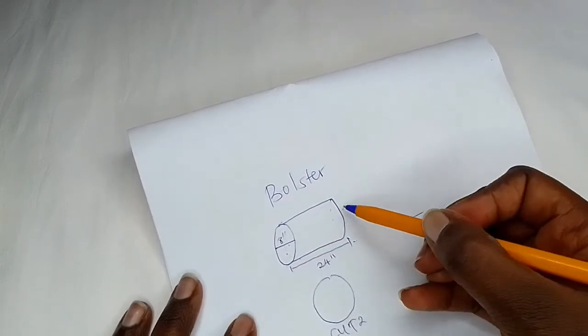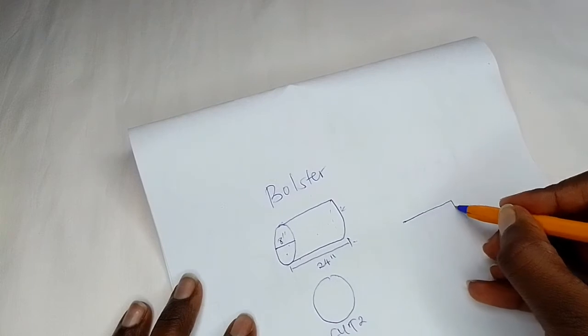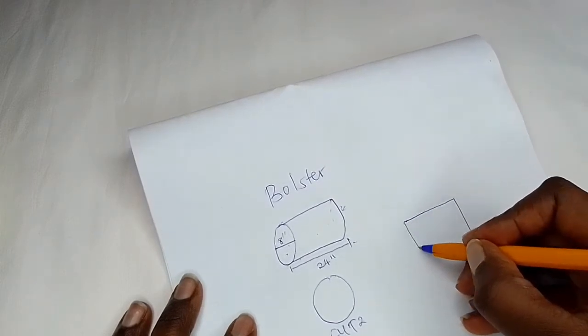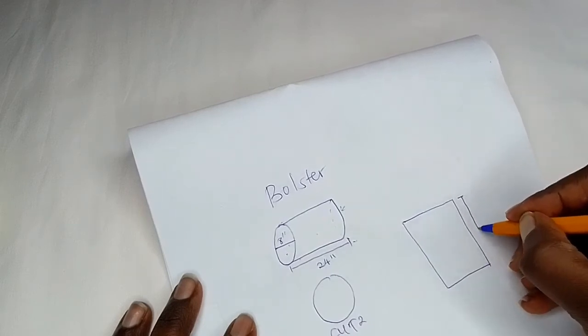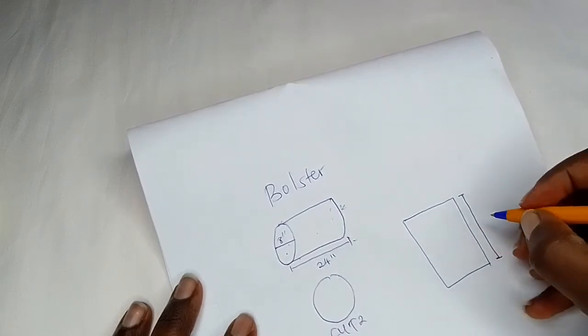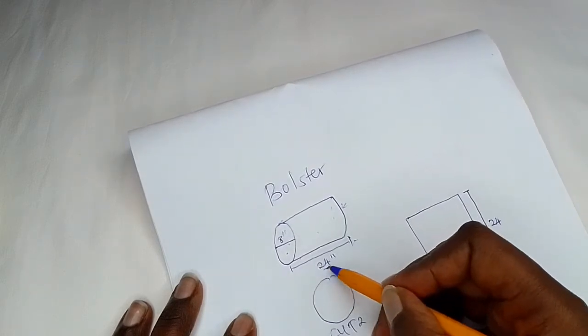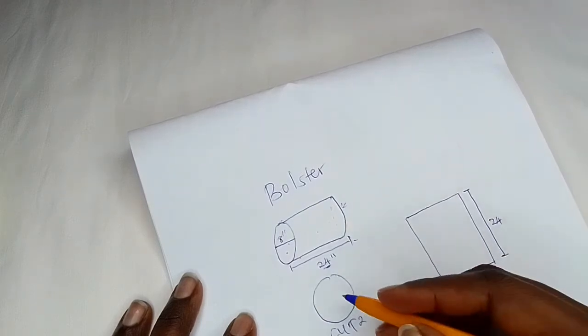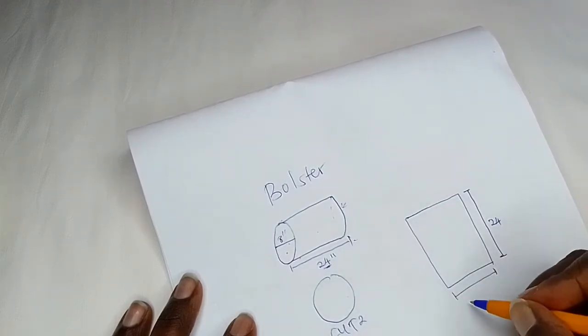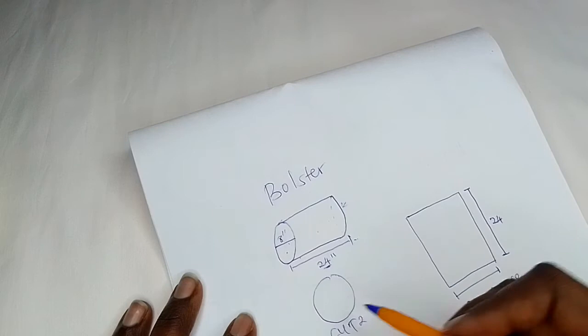And then I will have this rectangular shape like that. I hope you're following. And then this rectangular shape will have a length of 24 inches, which is the length of the bolster. And then this other length will be determined by the circumference of the circle.